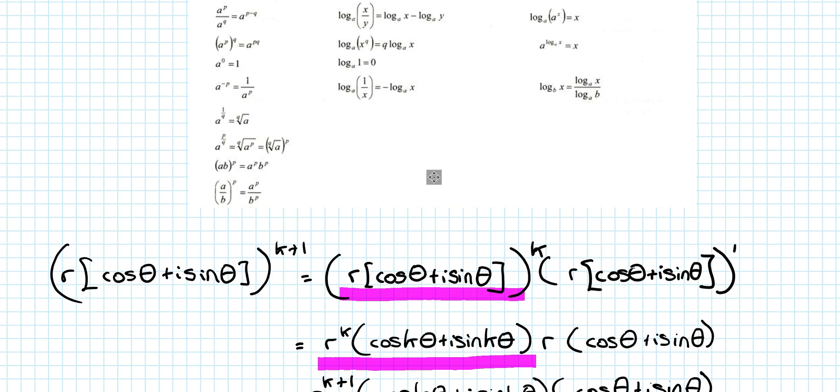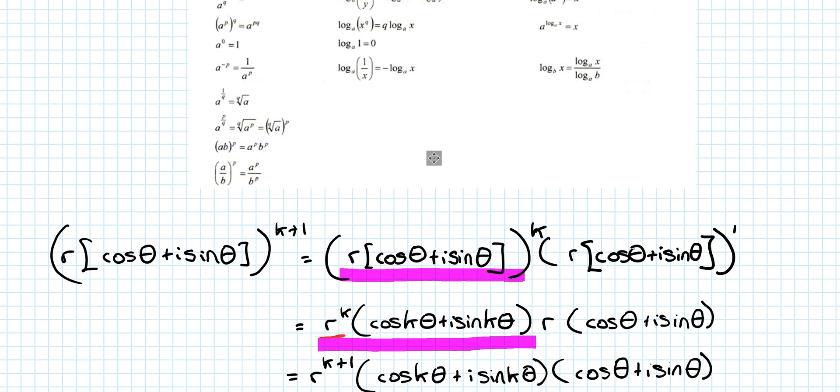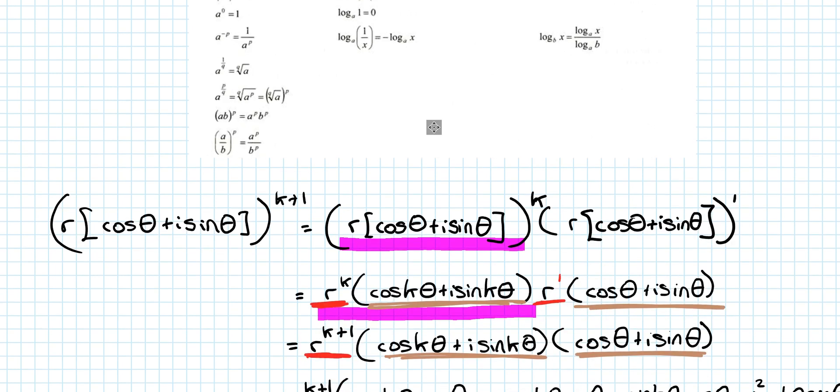Now I know order of multiplication does not matter. So what's r to the power of k by r? Well, the power here was 1. So I'm just going to add the powers. And then multiply this bracket by this bracket. So I've got that written down there. And that written down there.